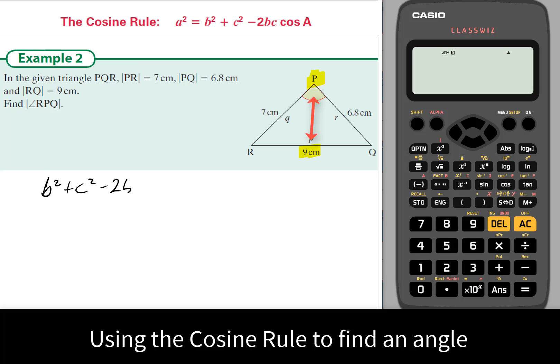Before subbing in the values, I'm going to manipulate the equation to rewrite it to find what angle a equals. So firstly, I'm swapping the left and right-hand sides of the equation. Cos A would be equal to a squared minus b squared minus c squared, divided by minus 2bc.